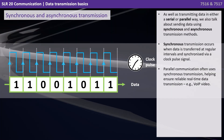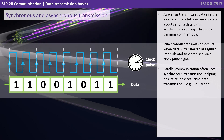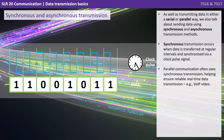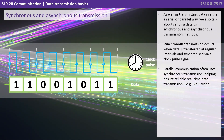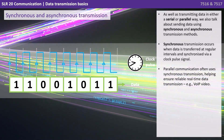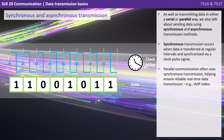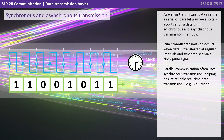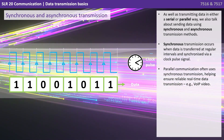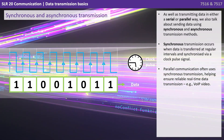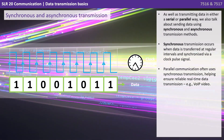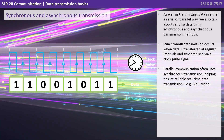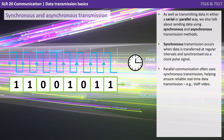As well as transmitting data in either a serial or parallel way, we also talk about sending data using synchronous and asynchronous transmission methods. Synchronous transmission occurs when data is transferred at regular intervals and synchronised via a clock pulse. Parallel communication often uses synchronous transmission, helping ensure reliable real-time data transmission, for example voice over IP and videos.